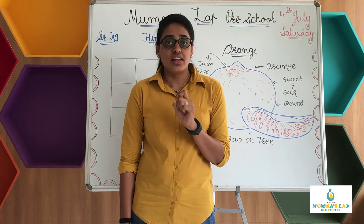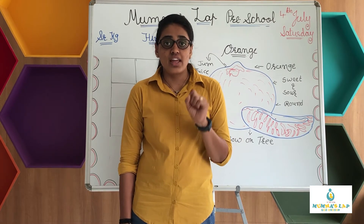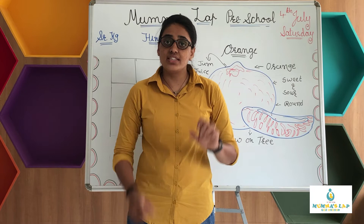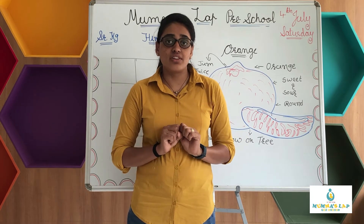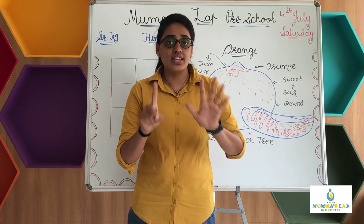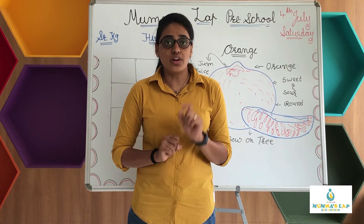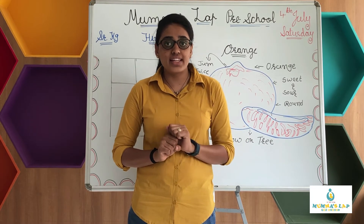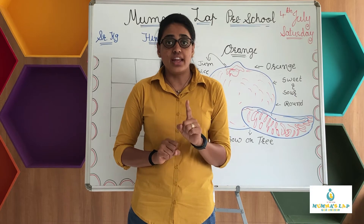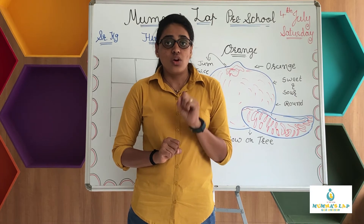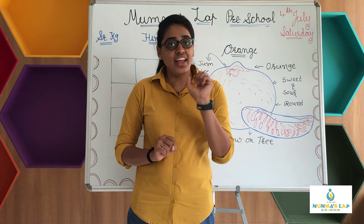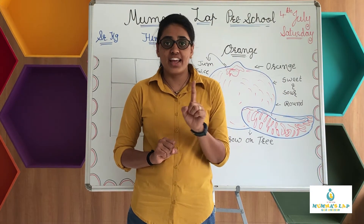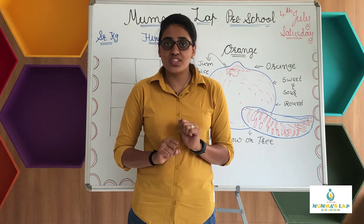Next, hexagon. Hexagon has 6 sides, so it's called hexagon. And oval — oval looks like an egg and it has no side.